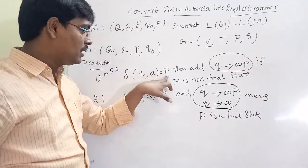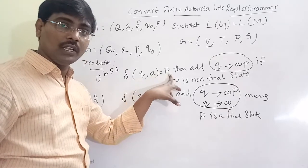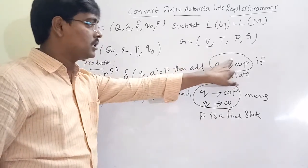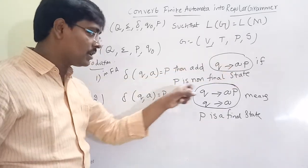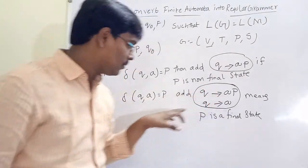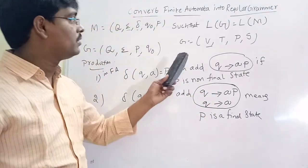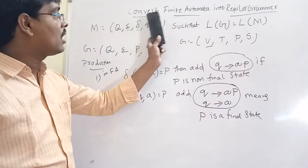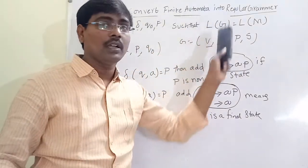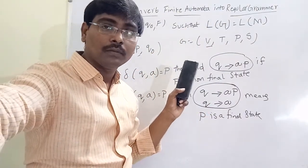To summarize the procedure: if p is a non-final state, simply add a single production; if it is a final state, add two productions. In the next section we will discuss the conversion of a finite automata into regular grammar with an example. Thank you.